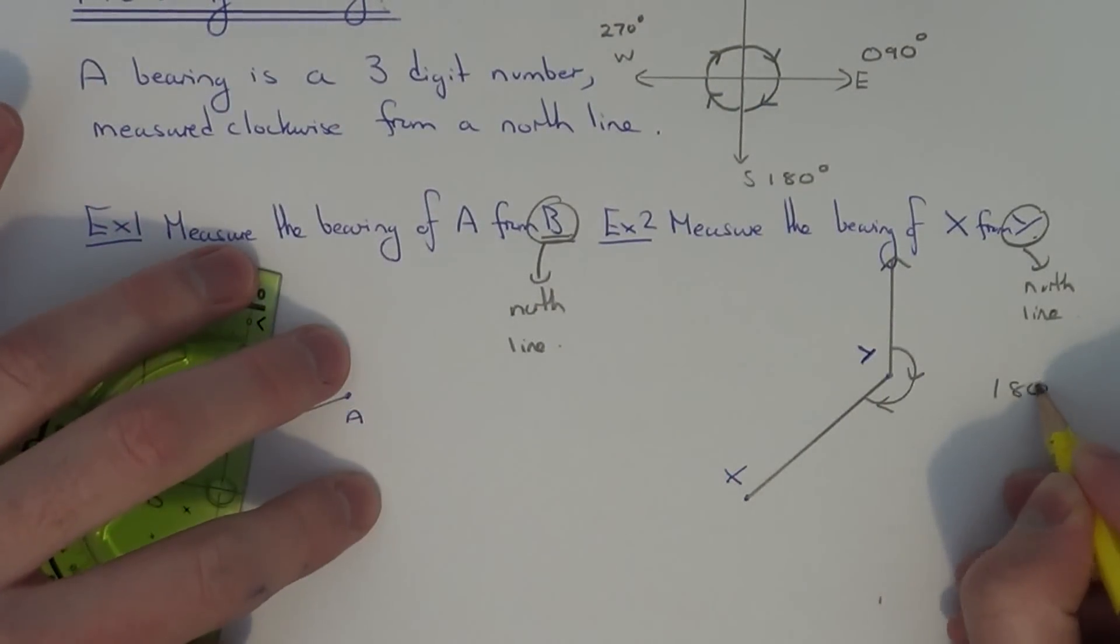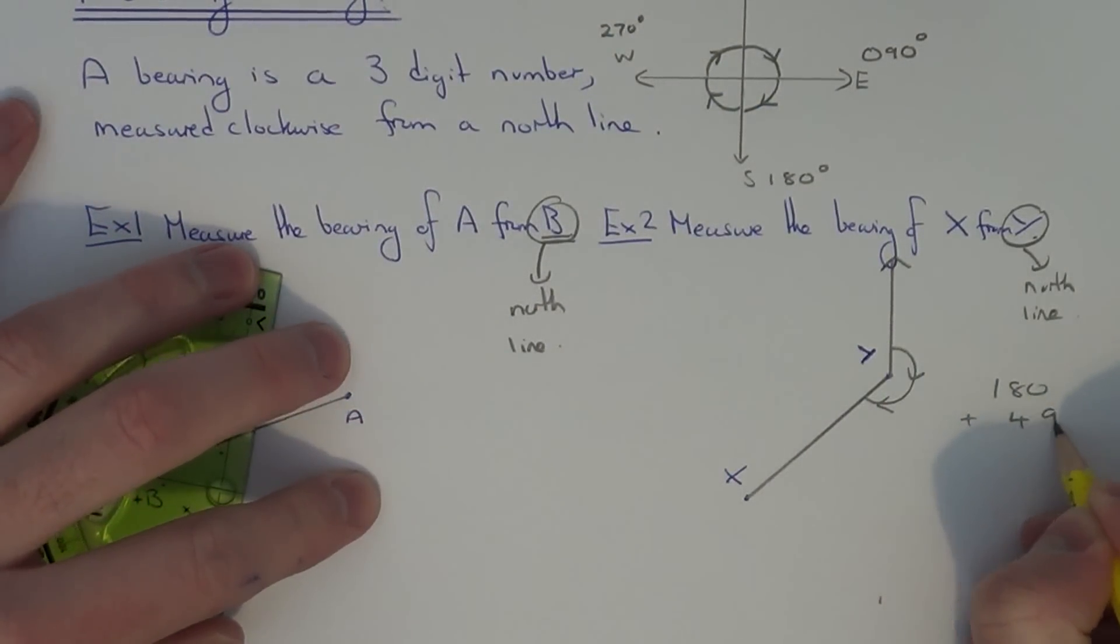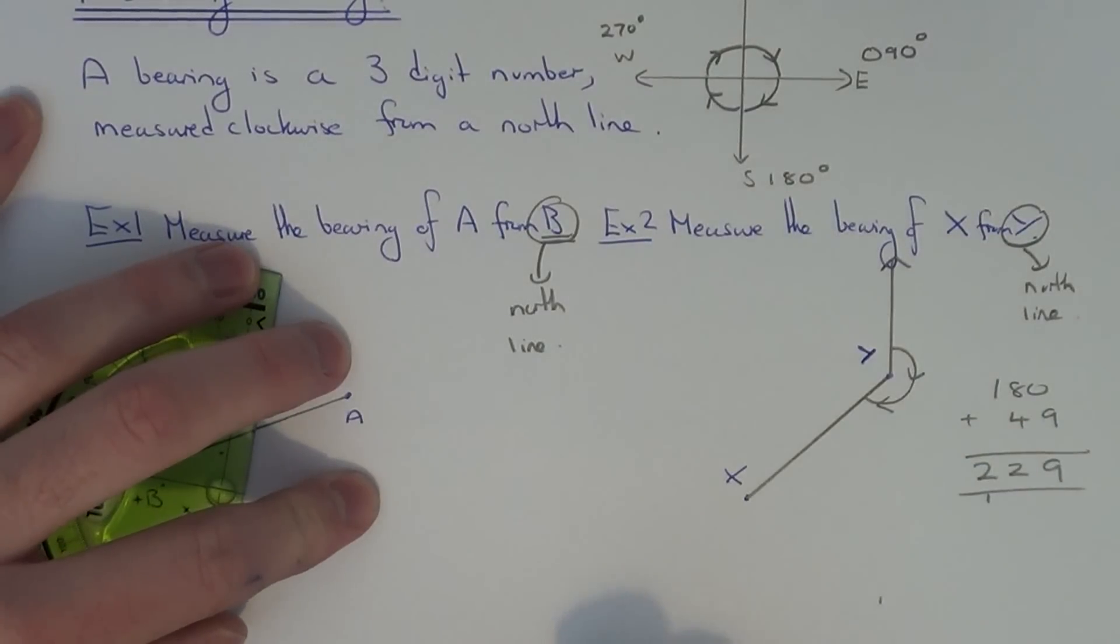So it's 180 plus 49. So if we add these two up. That gives us 229 degrees.